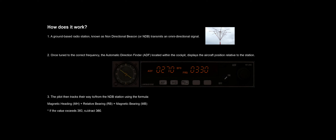The pilot then tracks their way to or from the NDB station using the formula: magnetic heading plus relative bearing equals the magnetic bearing. We won't be doing too much of this in this video — I will show you quickly once, but then I'm going to show you how to use what's called a rotating card to do the math for us. So let's jump inside our plane and go from there.